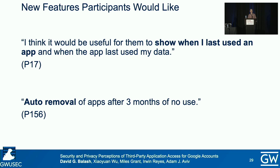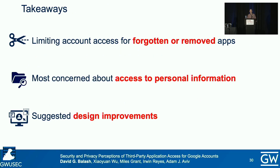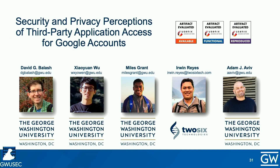When asked what new features they would like to help manage app access, common requests included detailed permissions explanations, data access logs, and permissions-level control. Participant 17 said: 'I think it would be useful for them to show when I last used an app and when the app last used my data.' Participant 156 responded: 'Auto-removal of apps after three months of no use.' This research identifies the need for limiting account access for unused, forgotten, or removed third-party apps. Study participants expressed the most concern about access to personal information like email addresses, but were less concerned with broader access to calendars, emails, or cloud storage. Suggested design improvements include the ability to designate specific account data as private and inaccessible, fine-grained permission controls, improvements to the permissions descriptive text, and adding a recent activity log that includes data access details.